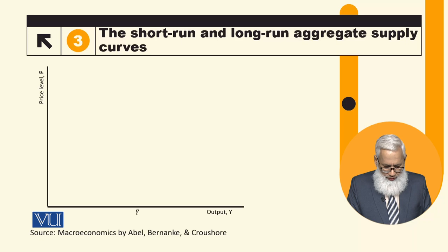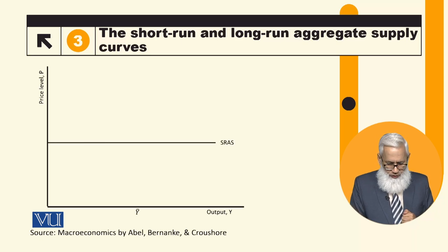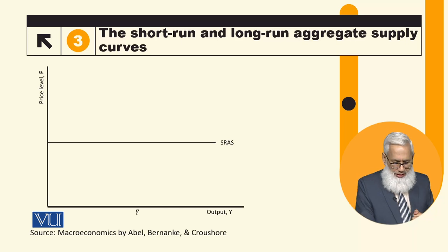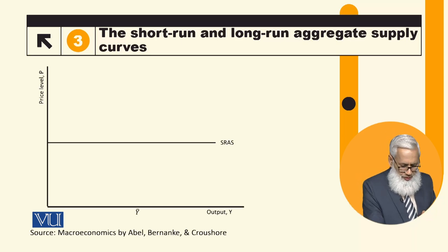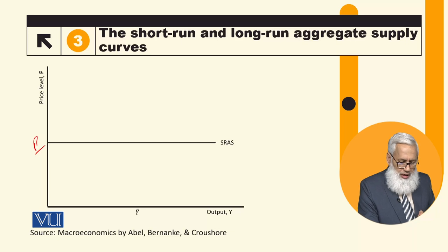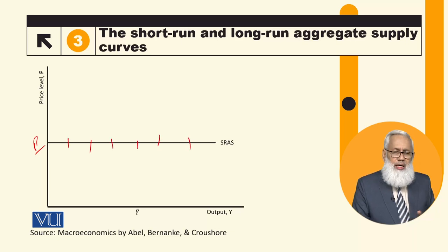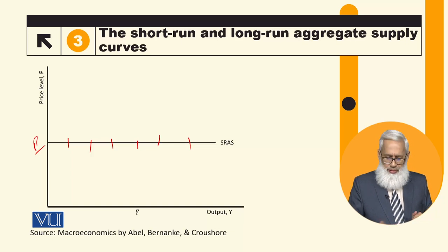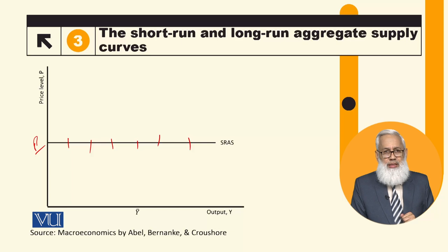Horizontal axis پر output لے رہے ہیں، vertical axis پر price level لے رہے ہیں۔ This is the short-run aggregate supply curve — short-run میں جو بھی price fixed ہوگی اس پر whatever is the demand وہ پوری کریں گے۔ So short-run aggregate supply curve is a horizontal line like this۔